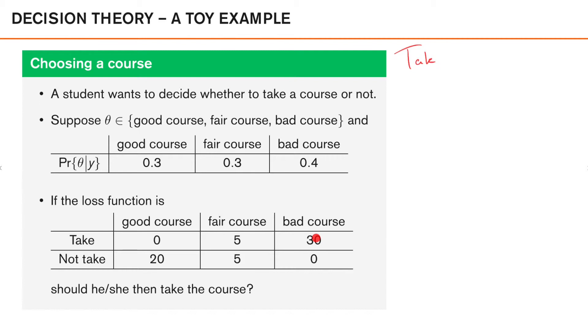So let's look at the expected loss for taking the course. So we have 0.3 times 0 if the course is good, plus 0.3 times 5 if the course is fair, and 0.4 times 30 if the course is bad. So if we sum all of this up, we get an expected loss of 10.5 for taking the course.